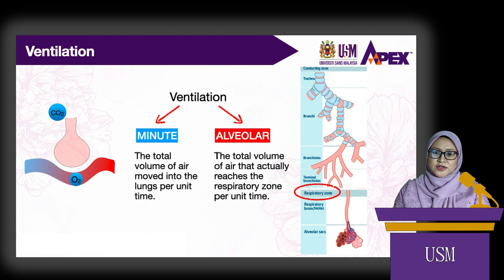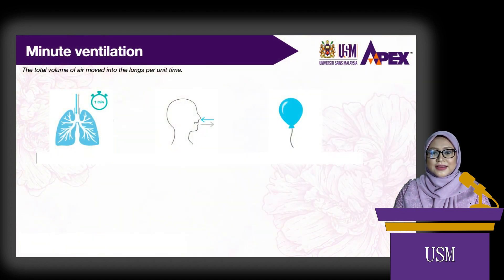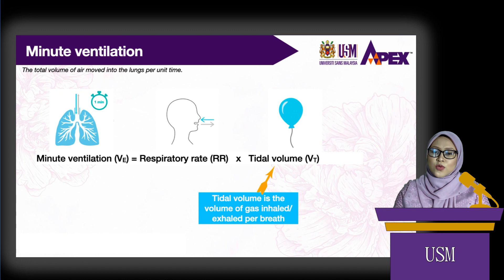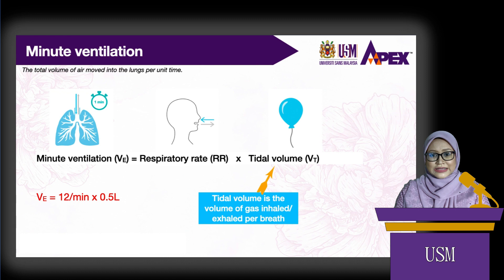Minute ventilation, also called pulmonary ventilation, is equal to respiratory rate multiplied by tidal volume. Tidal volume is the volume of gas inhaled or exhaled in one breath. For example, during normal or quiet breathing, respiratory rate is about 12 breaths per minute. With each breath, the tidal volume is about 500 milliliters, or 0.5 liters. Therefore, minute ventilation is about 6 liters per minute.